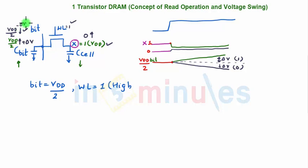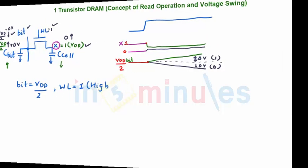We want to understand what the value of delta V is. Once we understand this, the refresh mechanism becomes a very interesting thing to understand. The bit line, initially at VDD/2, goes up by delta V when a 1 is read and down by delta V when a 0 is read. This bit line signal goes to the sense amplifier — we'll see how it gives the correct output in the next clip.